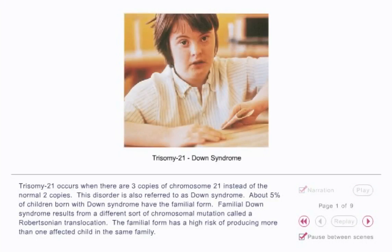Trisomy 21 occurs when there are three copies of chromosome 21 instead of the normal two copies. This disorder is also referred to as Down syndrome. About 5% of children born with Down syndrome have the familial form. Familial Down syndrome results from a different sort of chromosomal mutation called a Robertsonian translocation, which has a high risk of producing more than one affected child in the same family.